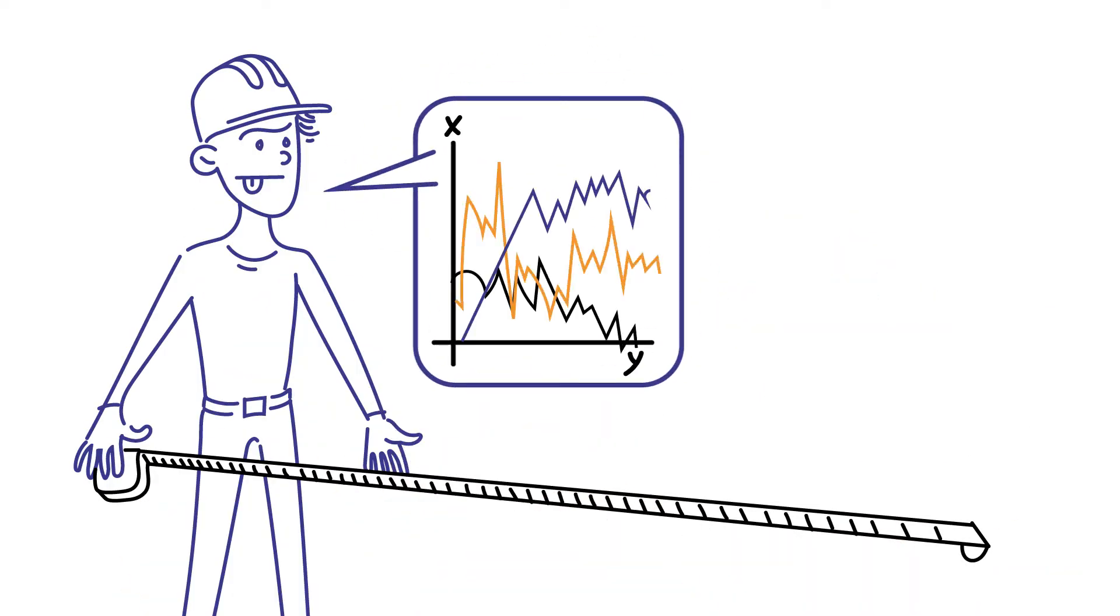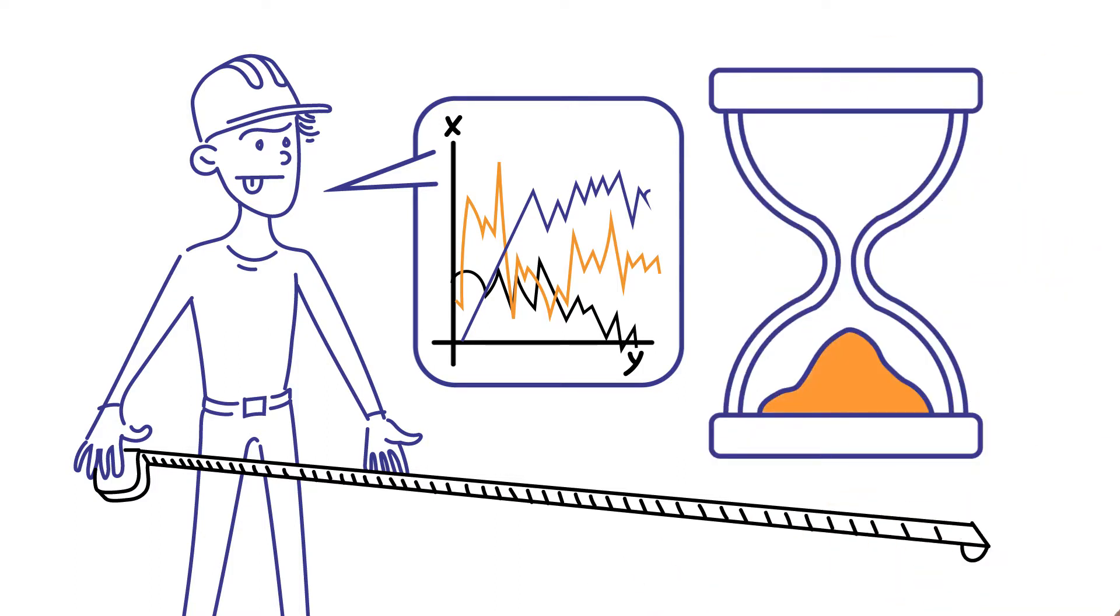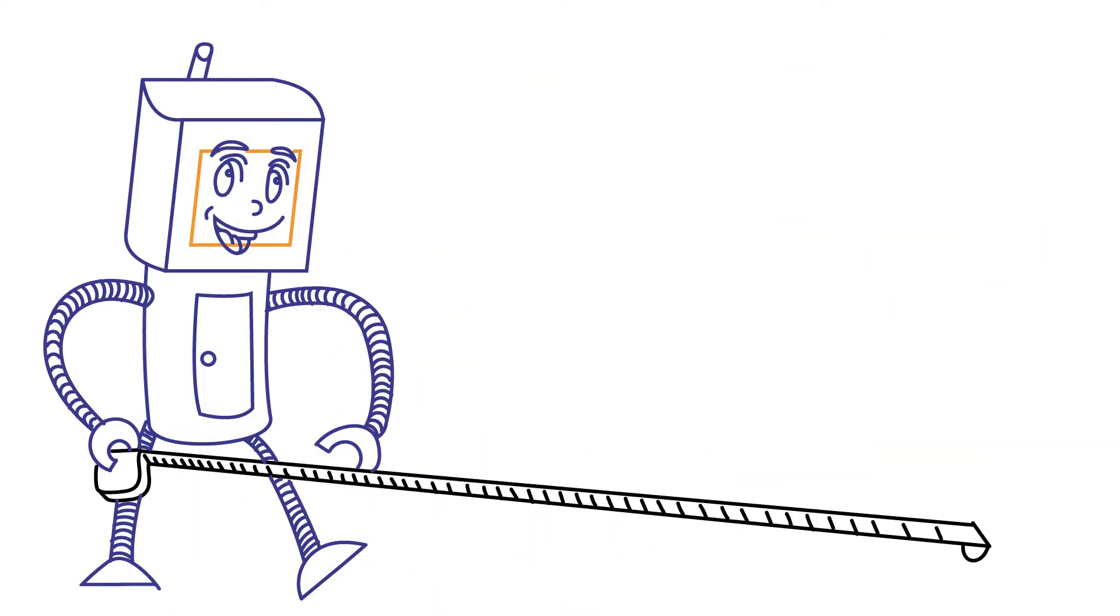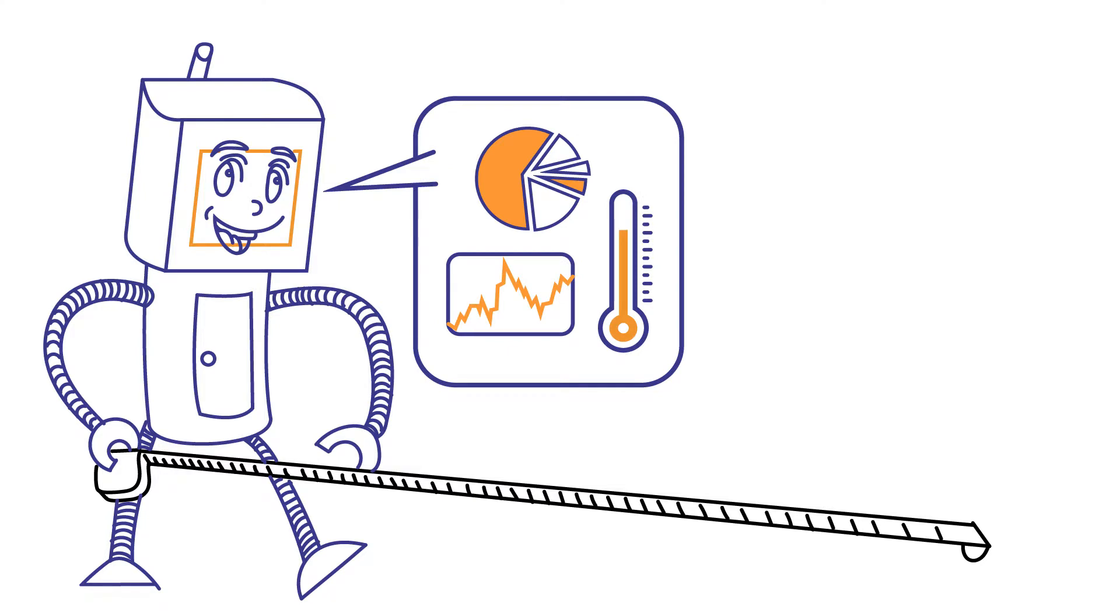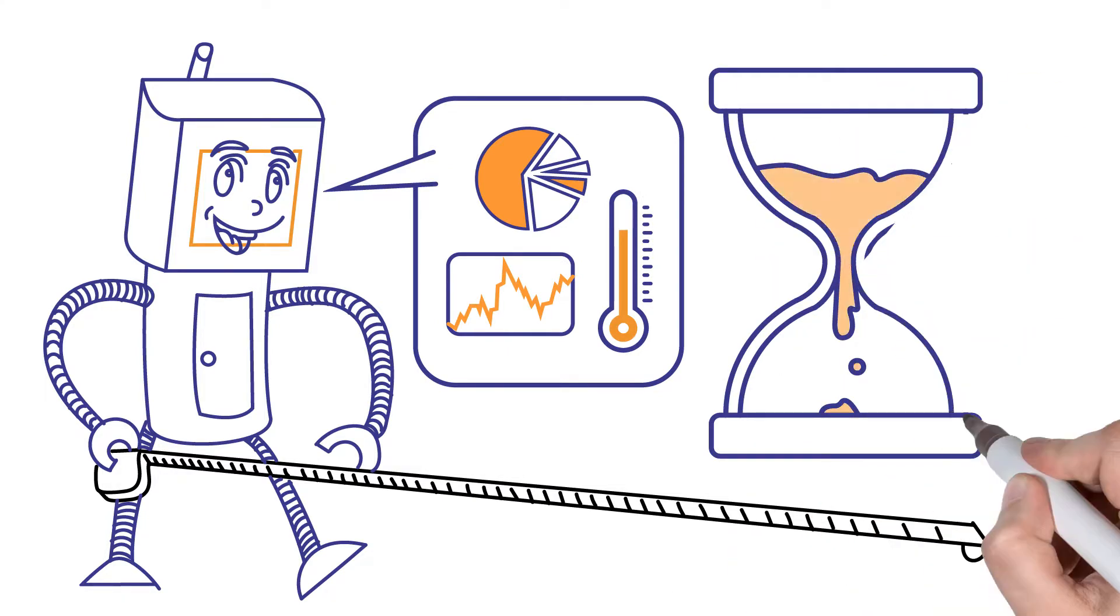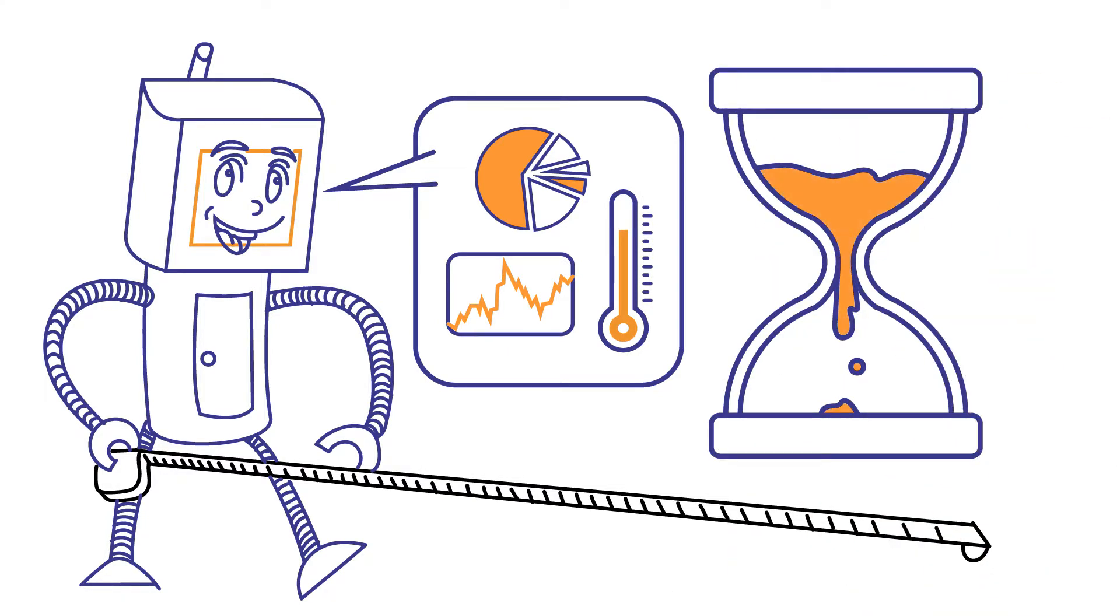With manual measuring, information about changes in structures may come in too late. Modern automatic monitoring, however, warns you as soon as changes start happening, giving you time to react before anything serious will happen.